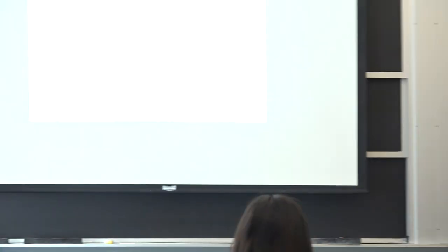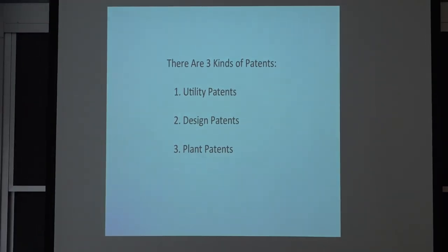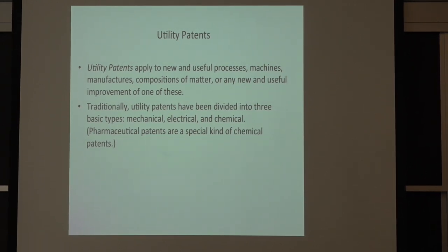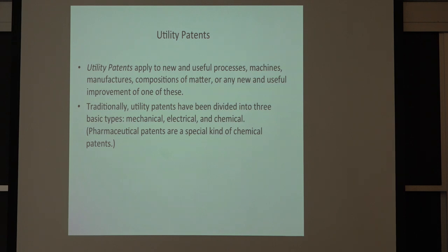What kinds of patents are there? There are three kinds: utility patents, design patents, and plant patents. A utility patent applies to new and useful processes, machines, manufacturers, compositions of matter, or any new and useful improvement on one of these — almost everything. Traditionally, utility patents have been divided into three basic types: mechanical, electrical, and chemical. Pharmaceutical patents fall into the category of chemical patents. Utility patents really cover almost anything that can exist in tangible form, as long as it's new and useful and non-obvious.